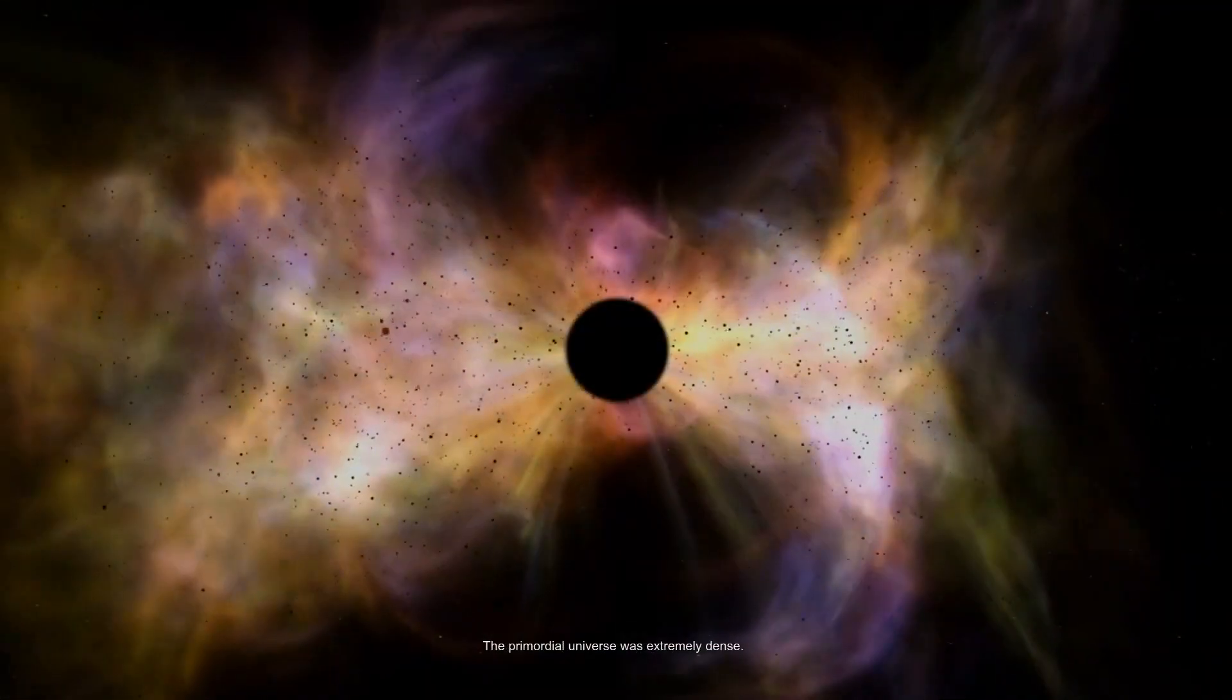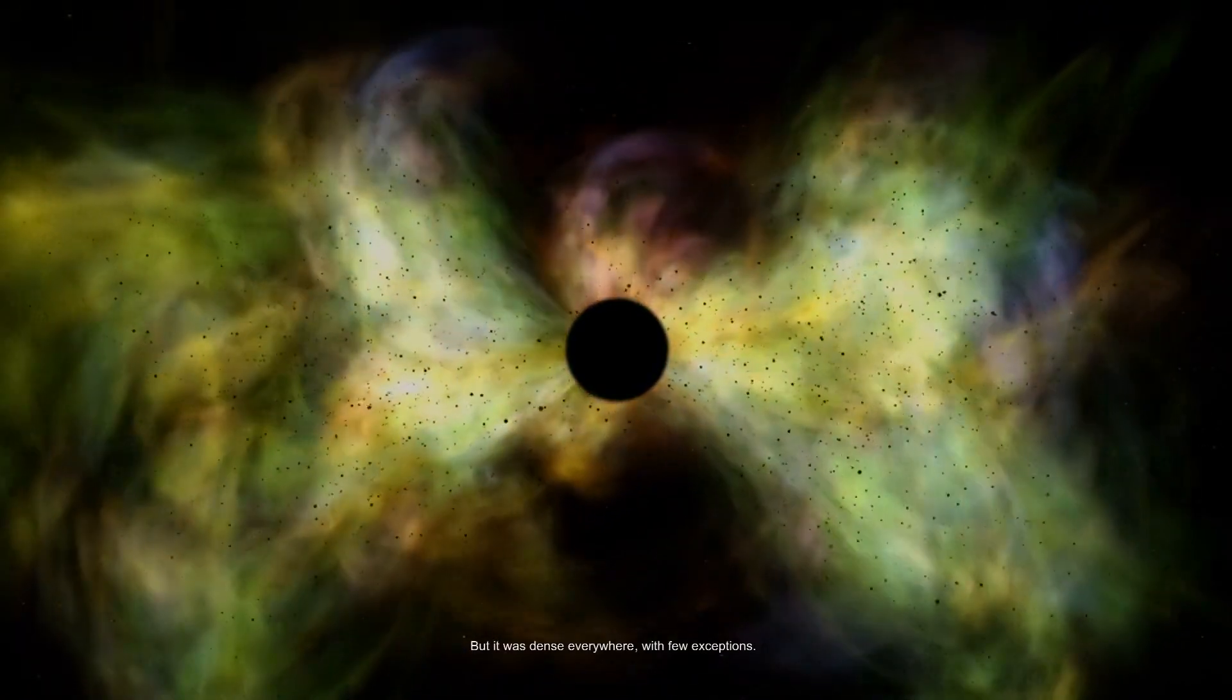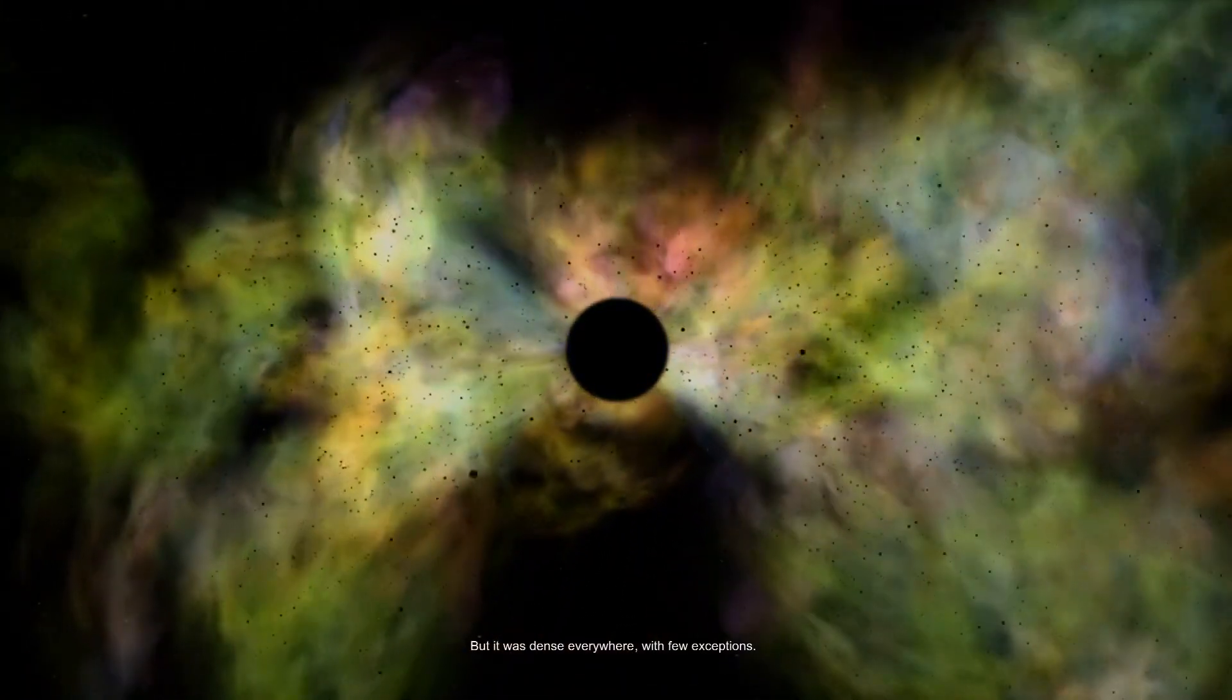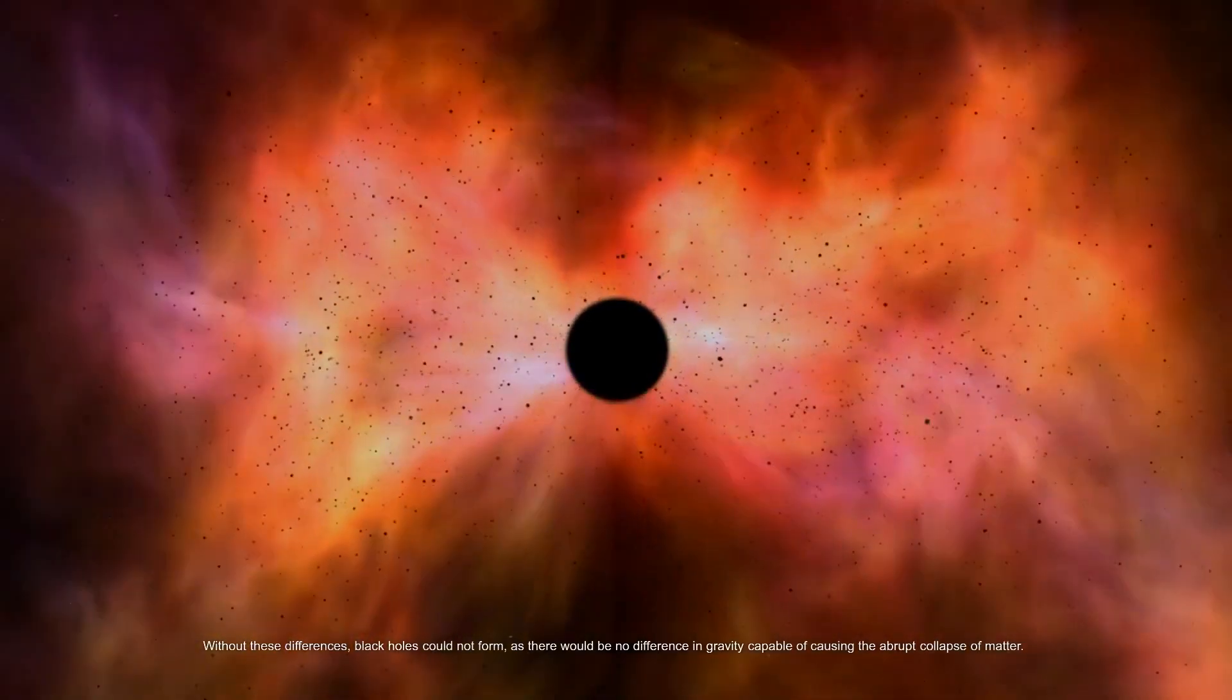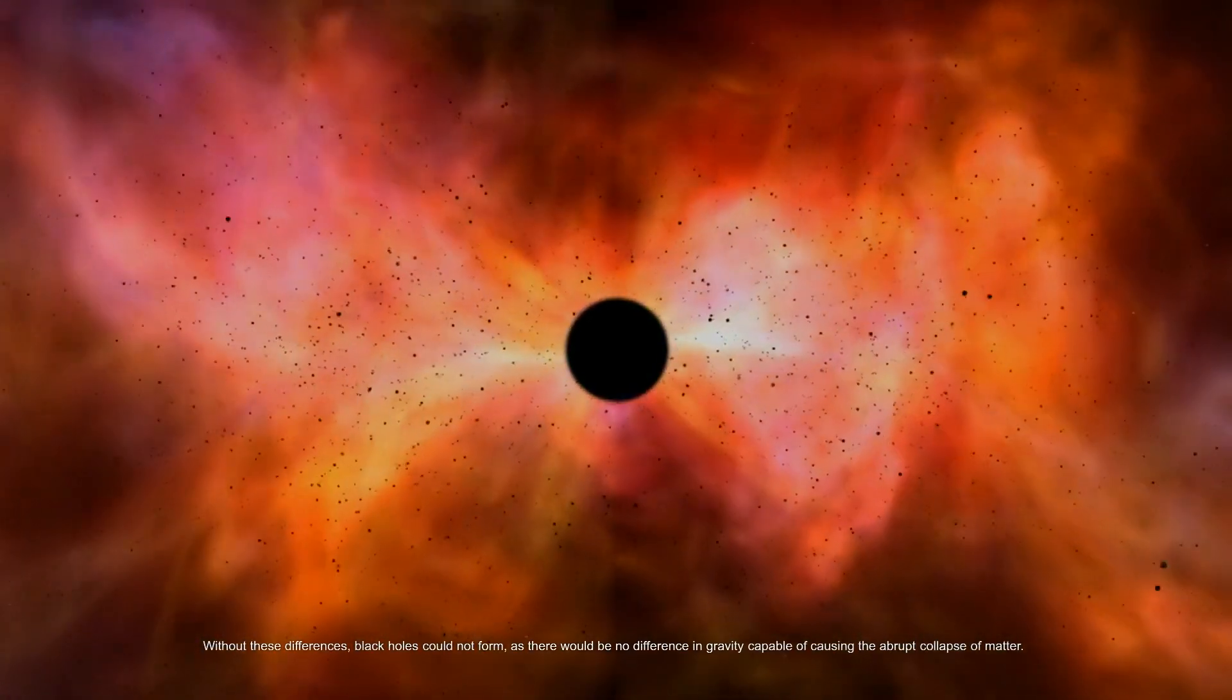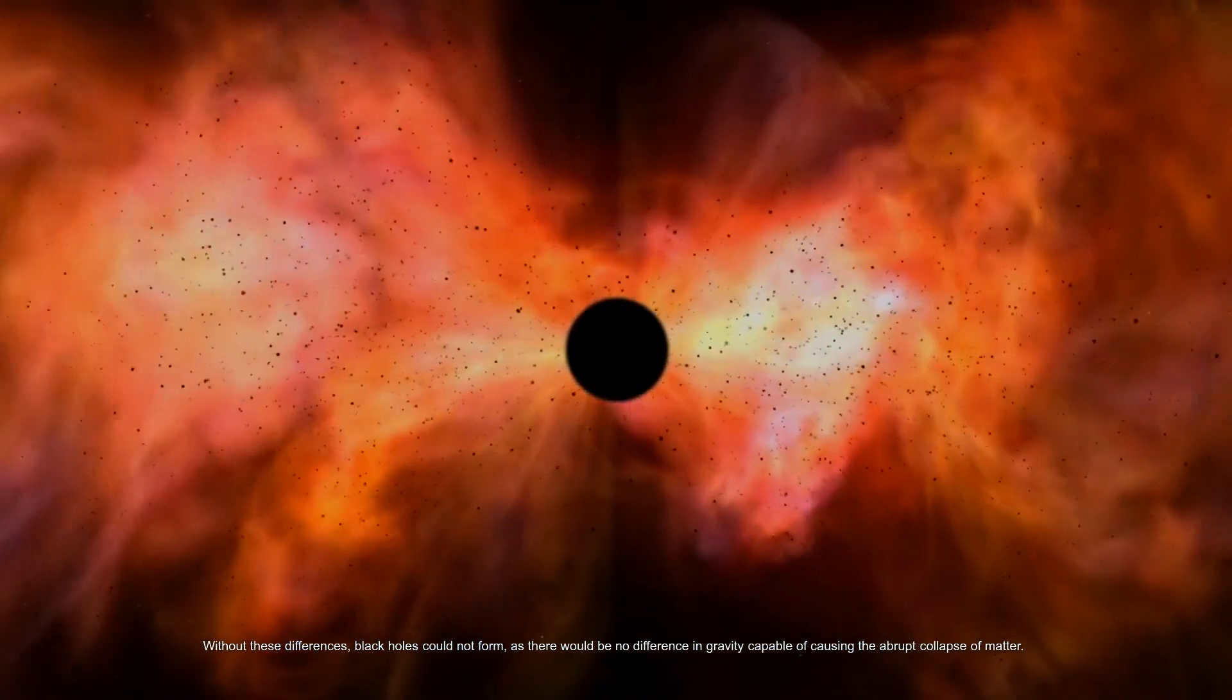The primordial universe was extremely dense, but it was dense everywhere, with few exceptions. Without these differences, black holes could not form, as there would be no difference in gravity capable of causing the abrupt collapse of matter.